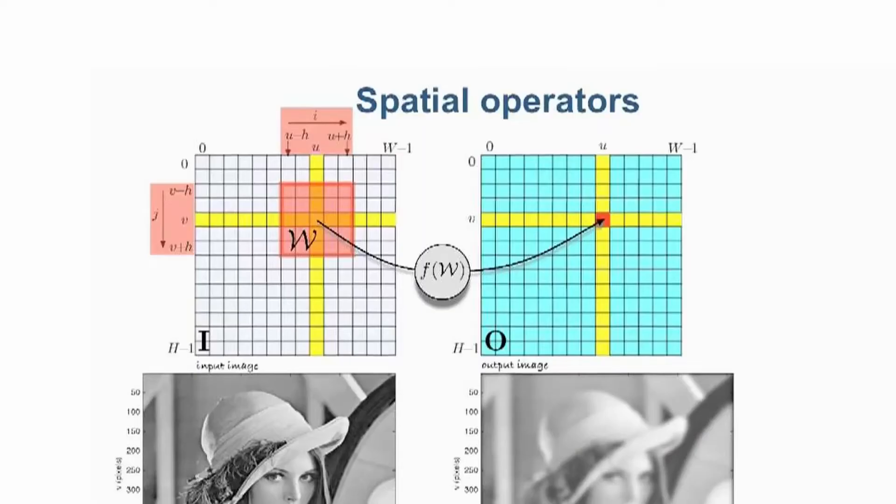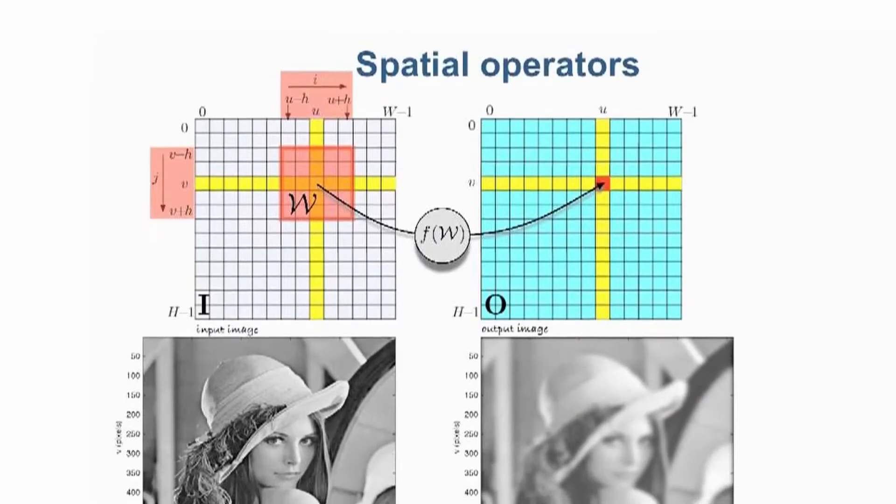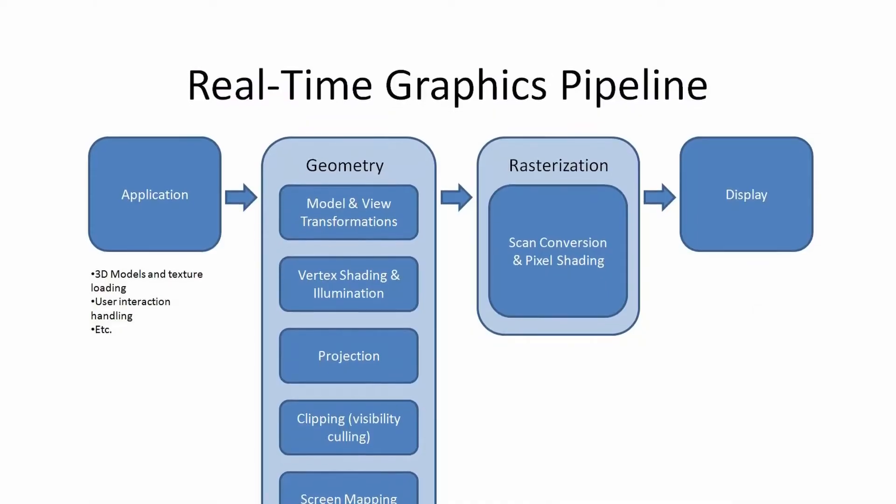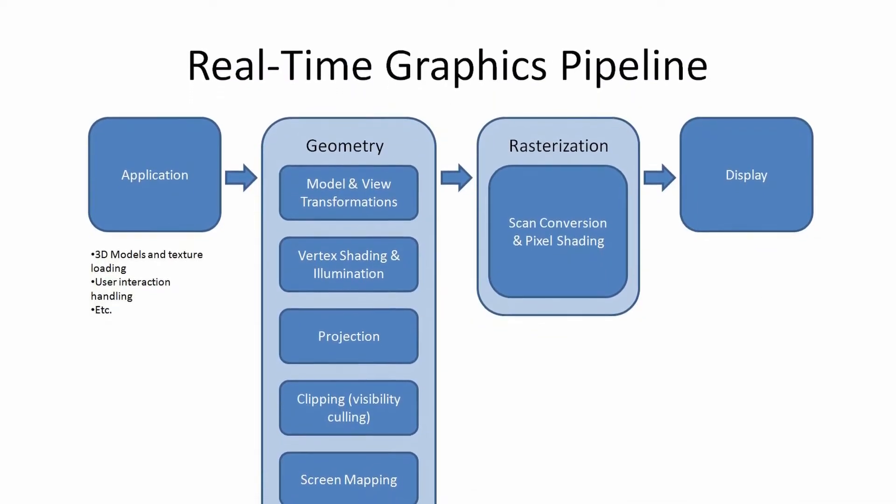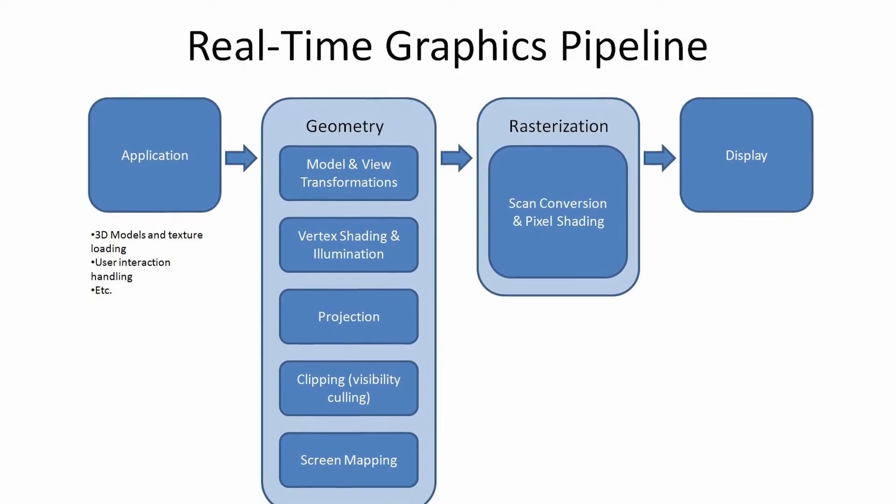Nowadays there are so many more classes you can take. There weren't any video game development classes when I started, but nowadays there are — you can take video game specific development classes, deep machine learning classes, and stuff like that. This didn't exist 15 years ago, but I did choose all the options that could lead to video game development, so I took image processing classes and computer graphics classes — things I knew would help me go towards what I wanted to accomplish in software development.